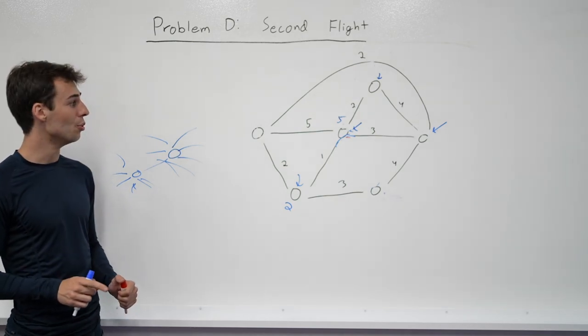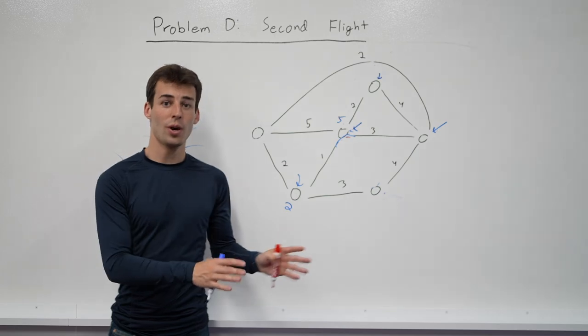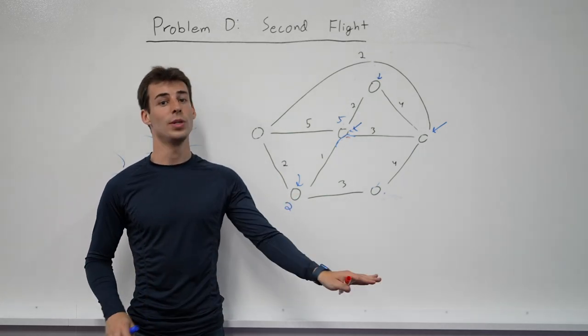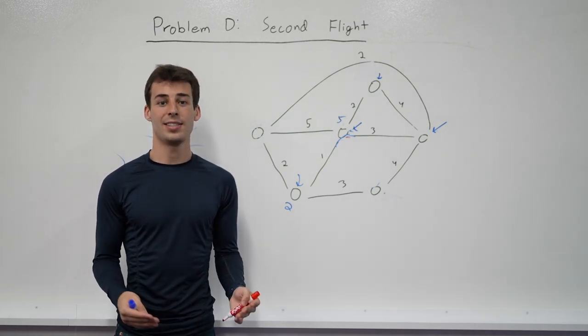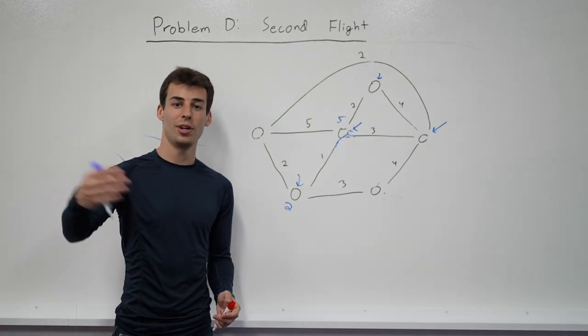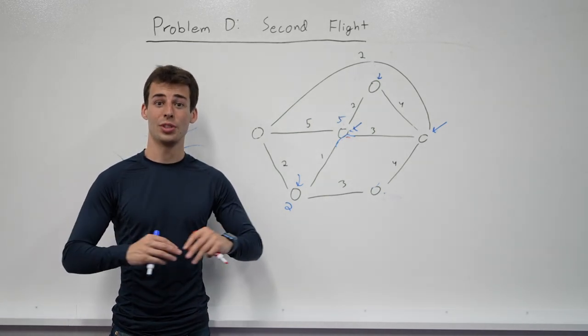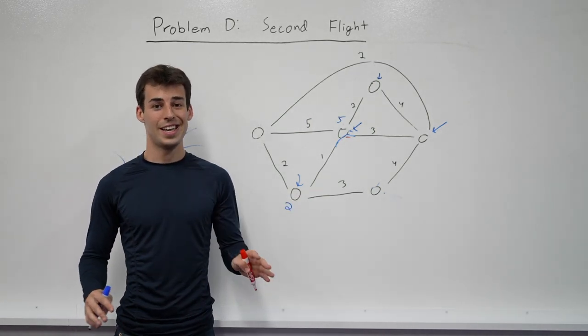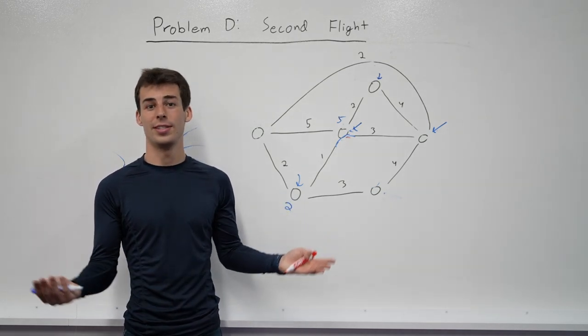And the only thing we have to do is memorize these queries. So if we've answered one question before, we just have to store it in memory, and then not recompute it. And it turns out, it is impossible to construct test cases that break this. We have a proof for it in the analysis. It winds up being something like, you only have so much degree to distribute, and even if you make the most vicious test cases possible, it still winds up being n root n.